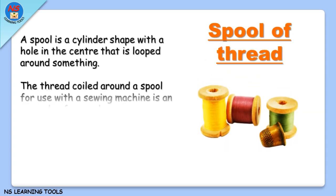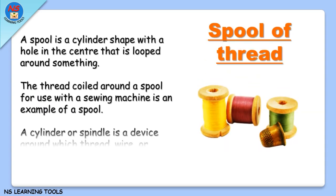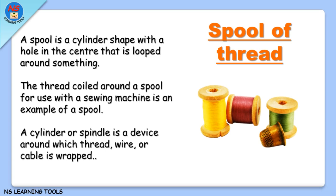Spool of thread. A spool is a cylinder shape with a hole in the center that is looped around something. The thread coiled around a spool for use with a sewing machine is a common example. A spool or spindle is a device around which thread, wire, or cable is wrapped.